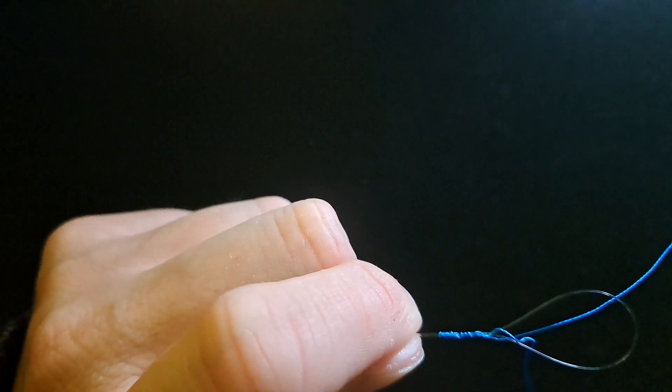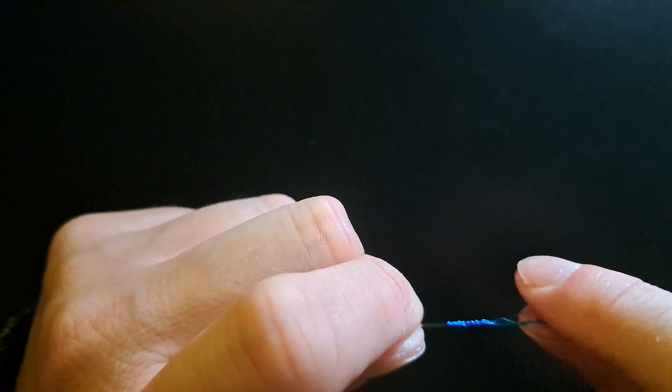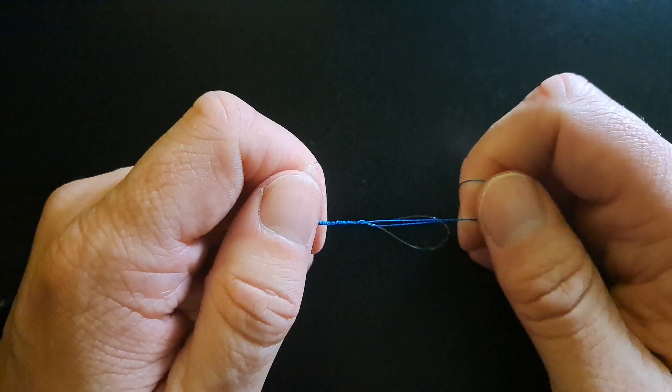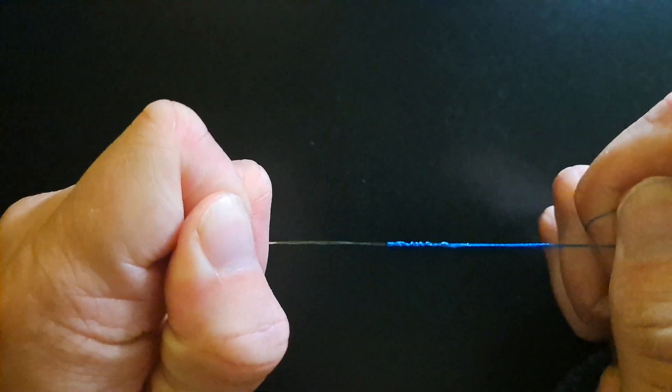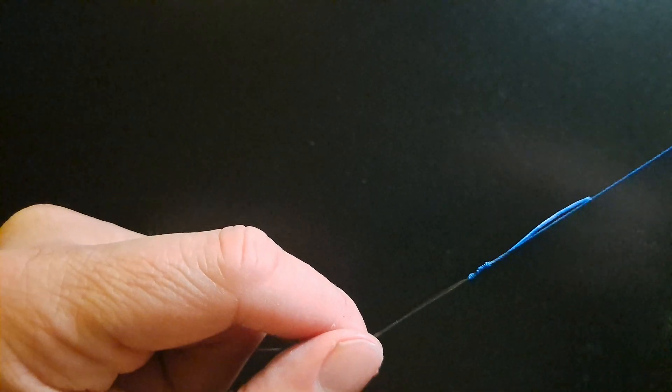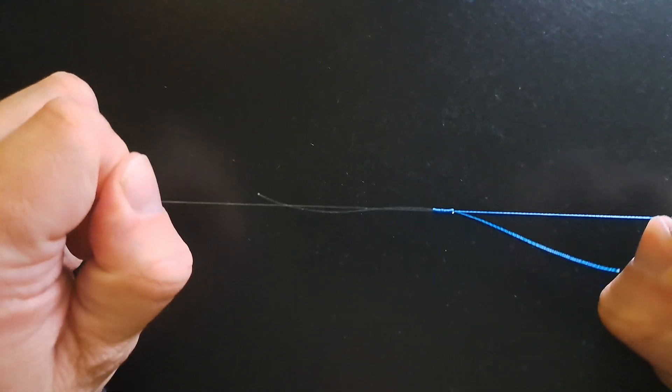At this stage we want to wet the line, and then holding all four ends of line, we just want to pull that together. Then we want to get the main line and the leader line and just pull that tight.